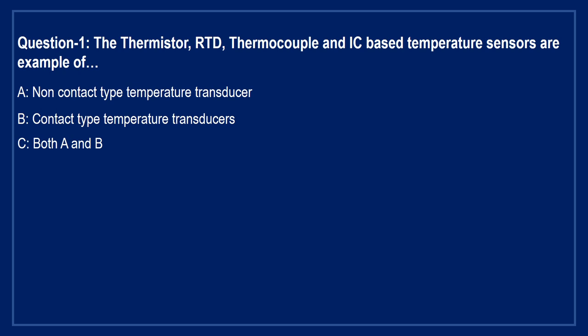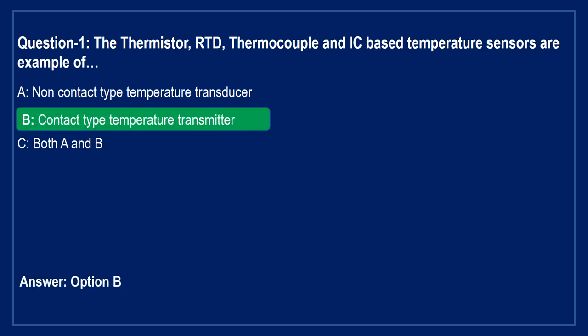The first question is: the thermistor, RTD, thermocouple, and IC-based temperature sensors are examples of — Option A: non-contact type temperature transducers. Option B: contact type temperature transducers. Option C: both A and B. The right answer is Option B, contact type temperature transducers. Yes friends, thermistor, RTD, thermocouple, and IC-based temperature sensors are examples of contact type temperature transducers.